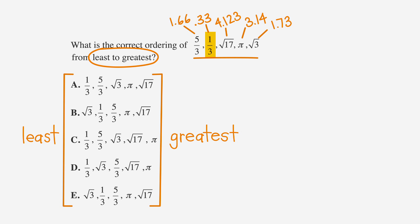Since 0.33, or 1 third, is the smallest number, we can eliminate the answer choices that don't show 1 third as the least. And since 4.123, or the square root of 17, is the greatest, we can eliminate the answer choices that don't end with the square root of 17. That leaves choice A. Easy enough, right? Using the calculator makes the process of ordering the numbers quick and error-free.